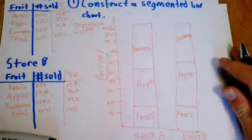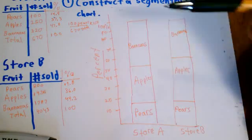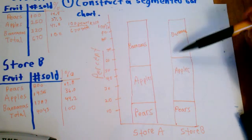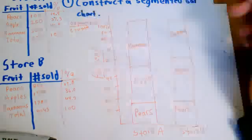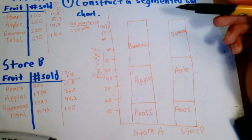So looking at this segmented bar chart, you can come to the conclusion that Store A sold a relatively greater proportion of bananas than Store B. And you can get that also just from looking at the percents, but the chart makes it pictured and makes it easier to see.